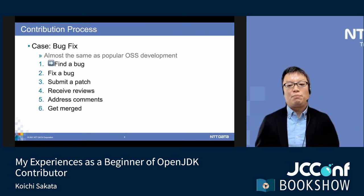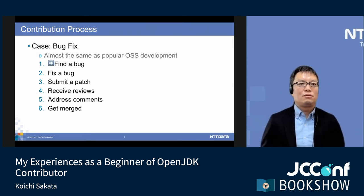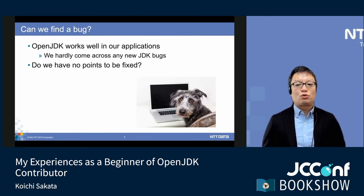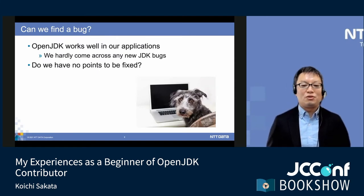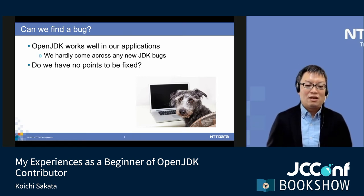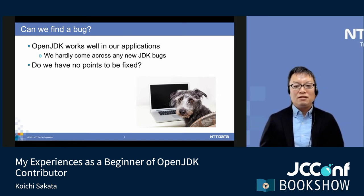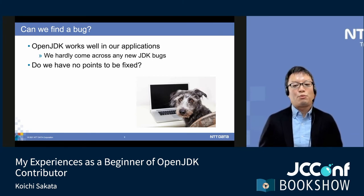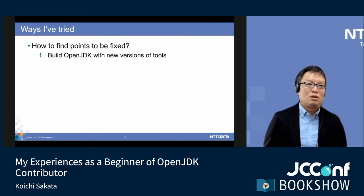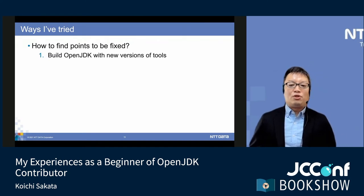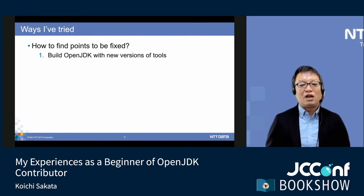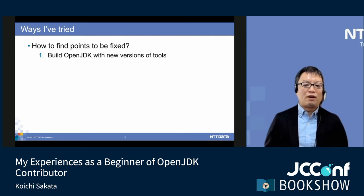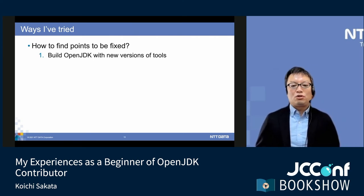The first step is to find a bug. As you know, OpenJDK works well in our applications almost always. Have you ever come across a new JDK bug? We tried to find bugs but failed to do so. What should we do? Where are the points to be fixed? I tried some different ways. As a result, I found points to be fixed before. I'll introduce them to you.